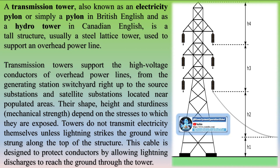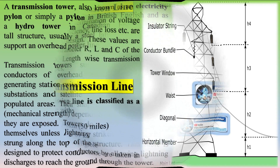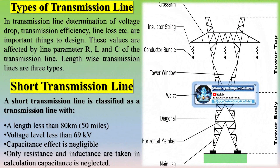Their shape, height, and mechanical strength depend on the stresses to which they are exposed. Towers do not transmit electricity themselves unless lightning strikes the ground wire strung along the top of the structure. This cable is designed to protect conductors by allowing lightning discharges to reach the ground through the tower.